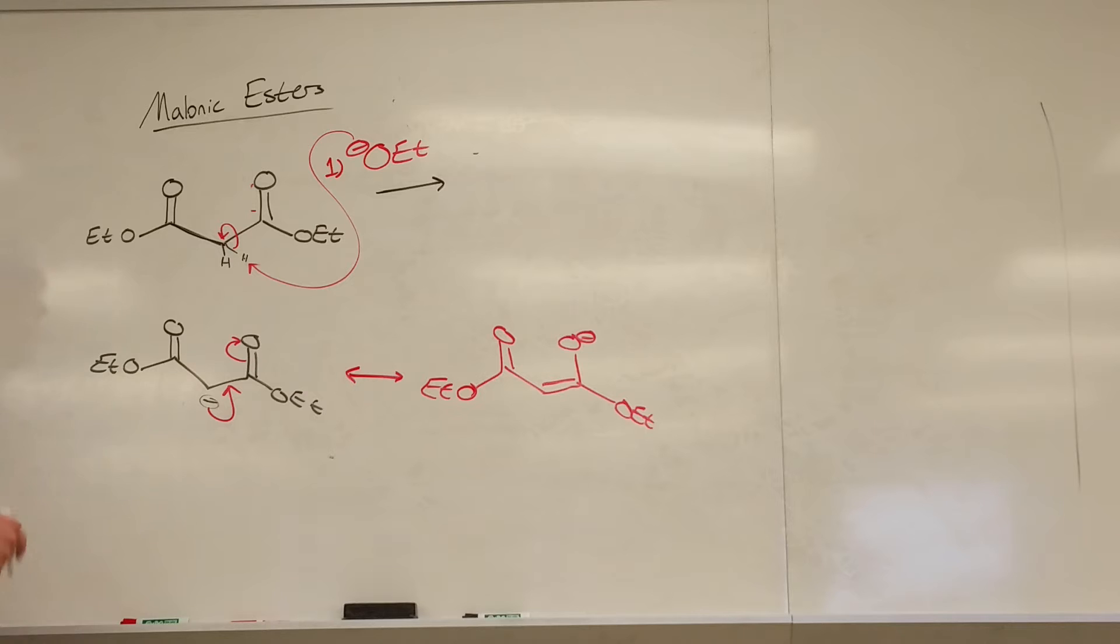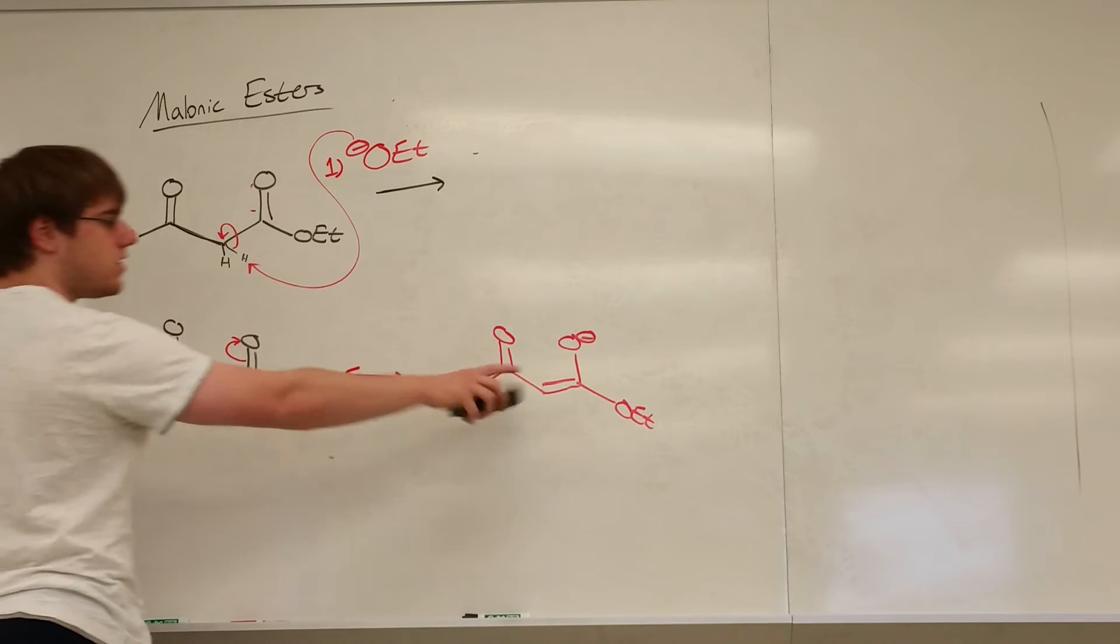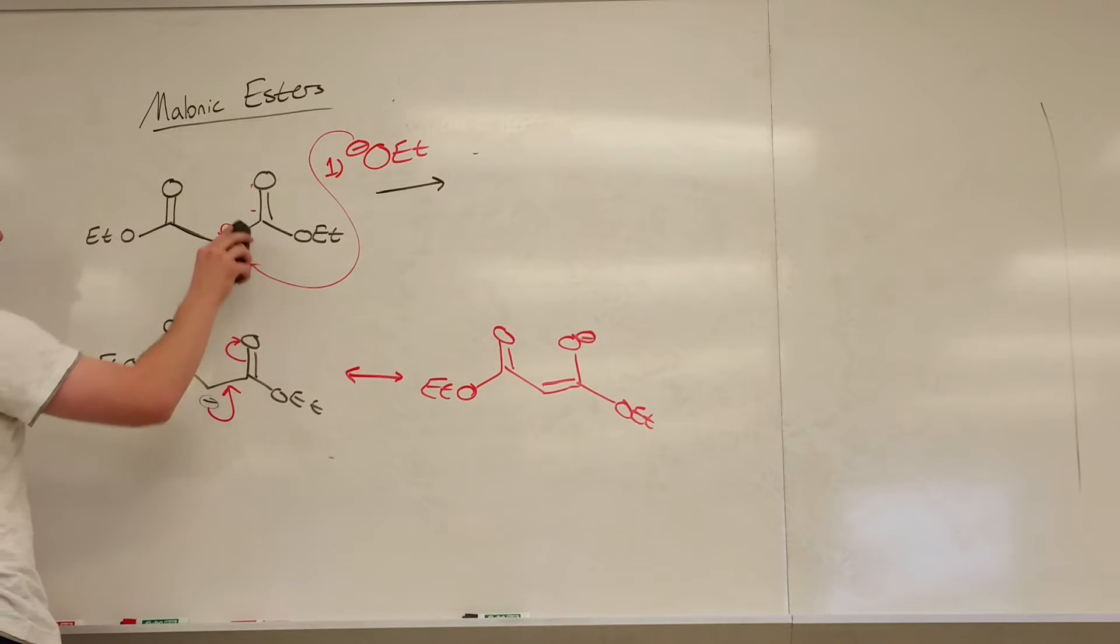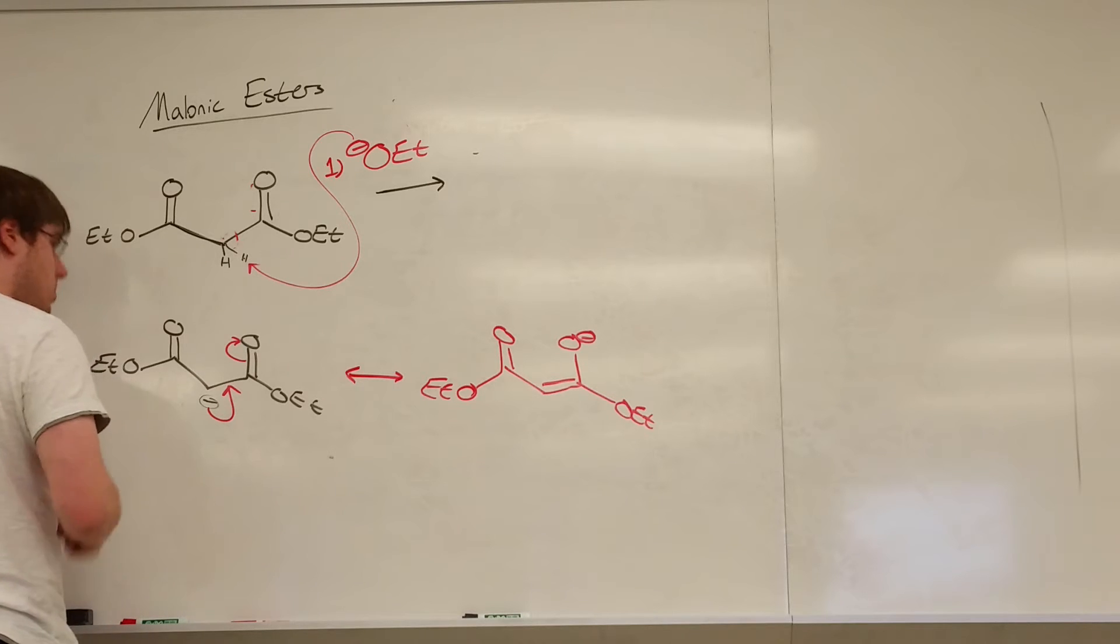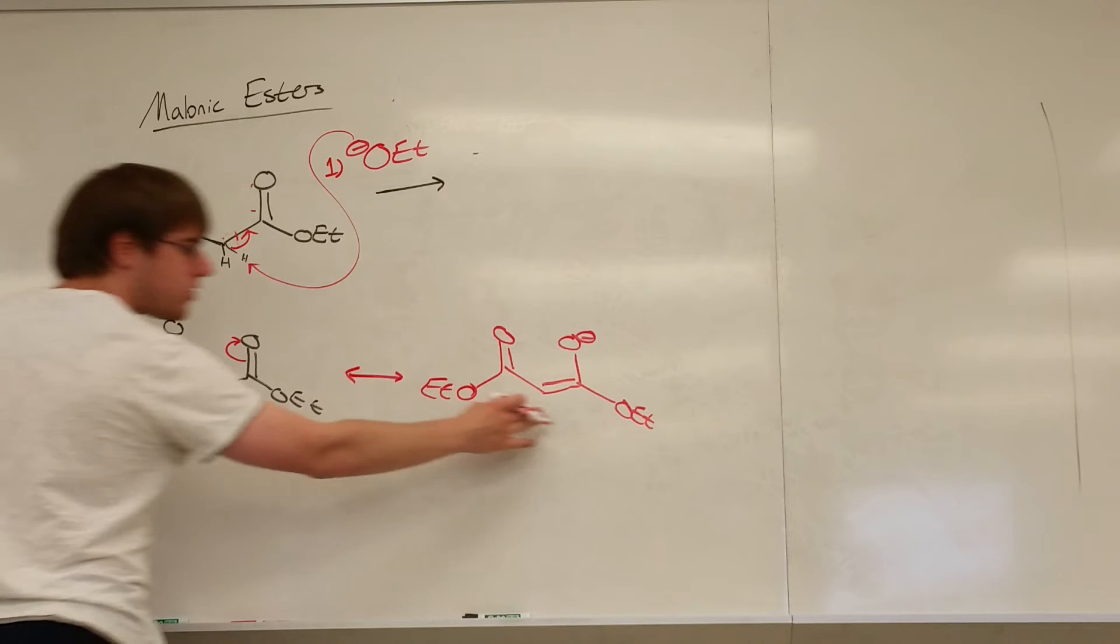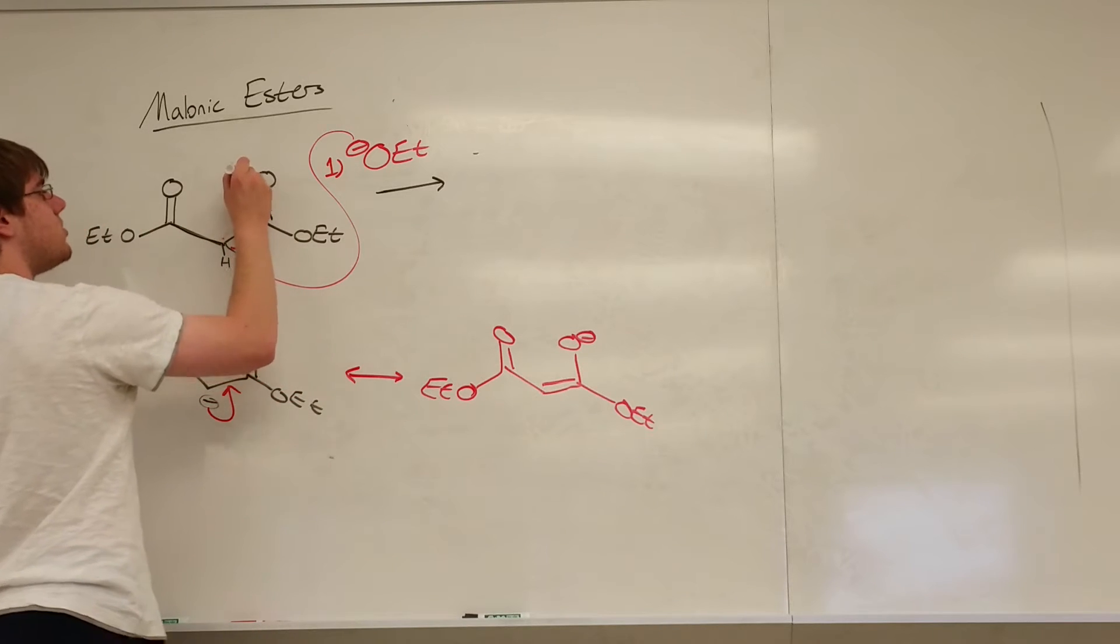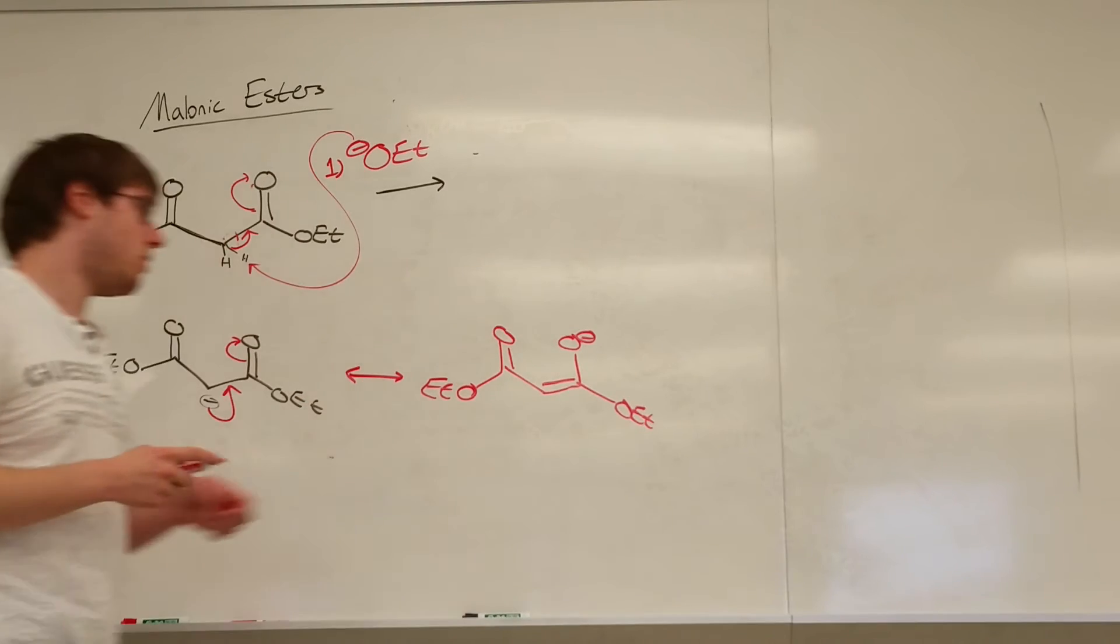So the other way you could draw your first step is to show how we got to this resonance structure, rather than just putting the negative charge on the carbon. And the way you would do that is, the first arrow of the stable base is still pulling off that proton, but the electrons on the carbon-hydrogen bond go down to where the carbon-carbon double bond is forming, and the electrons of the oxygen swing up. And so now you have an enolate.